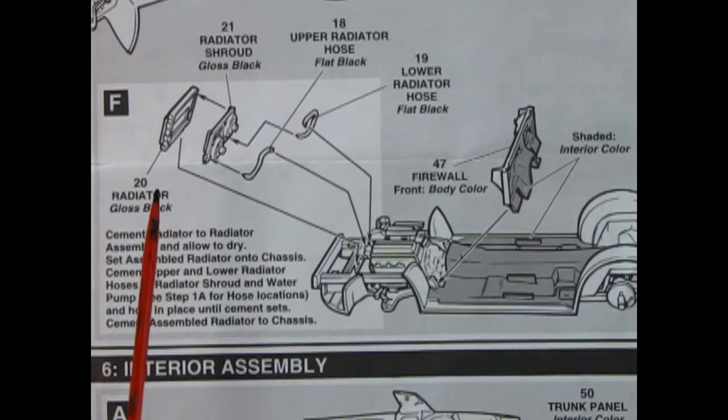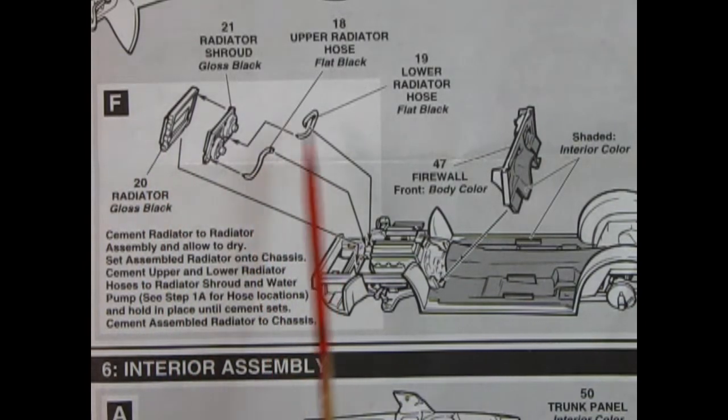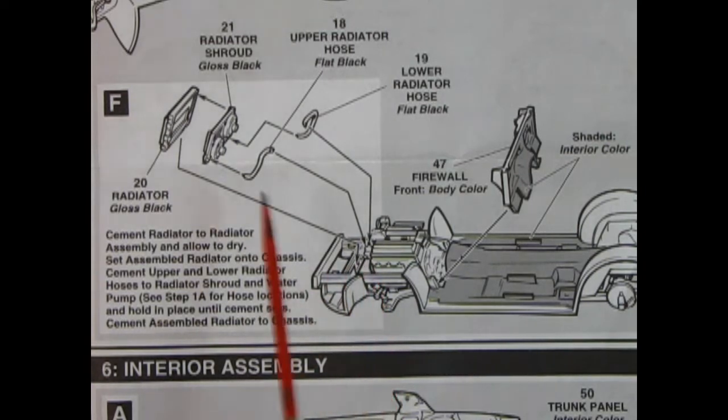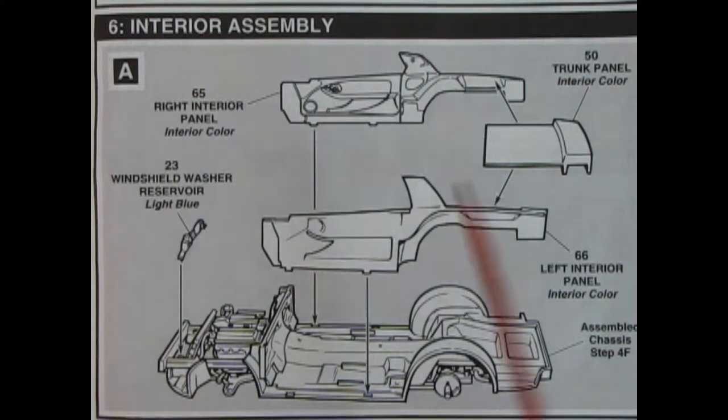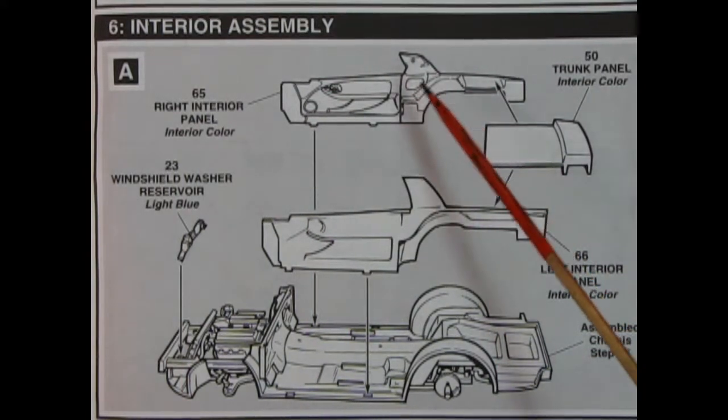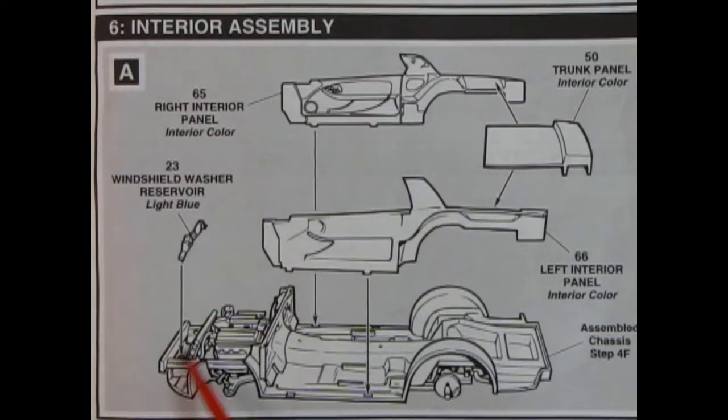Panel F shows the radiator going together with the outer and then the inner with the fans. Then there's those radiator hoses and you have to consult the front of the instruction sheet to look at that water pump as to where they go. We also have our firewall being mounted back here. In panel 6A we have the interior assembly with the separately mounted door panels, rear trunk panel, trunk floor panel, and a windshield washer reservoir which glues up into the front of the car.